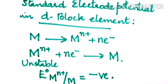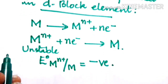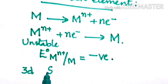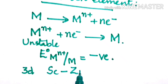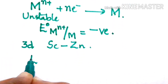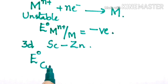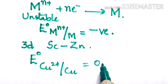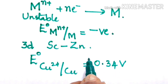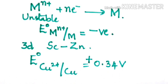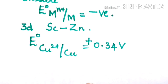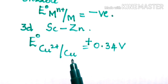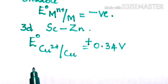When we check the 3d series from scandium to zinc, we find that the E° value of Cu²⁺/Cu is +0.34 V, which is a positive value. The rest of the elements have negative values. Why is only copper's value positive?